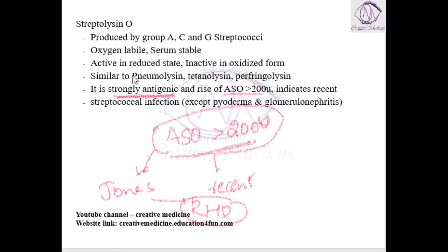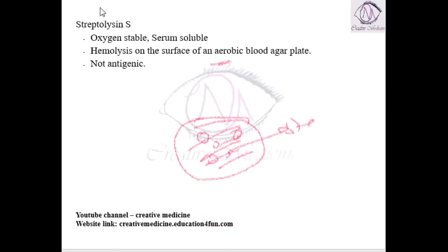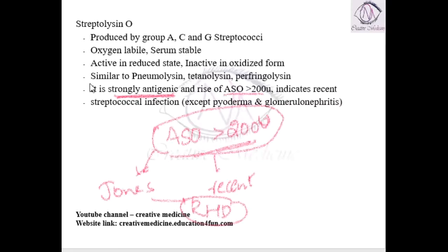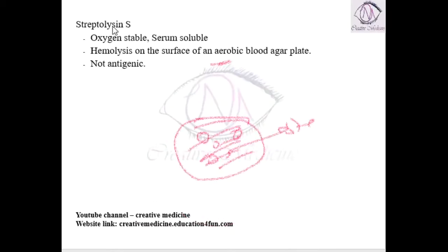Streptolysin O is strongly antigenic, whereas Streptolysin S is not antigenic. Because it is strongly antigenic, Streptolysin O is diagnostic — it is actually one of the Jones criteria in rheumatic heart disease. Streptolysin S, because it is not antigenic, does not have important clinical significance.